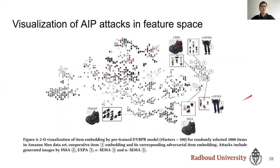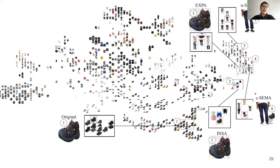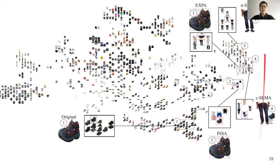Here we zoom in on Figure 4 from our paper, which shows a t-SNE space illustrating how items move when under attack. We see the original item in this space. Under attack, all items move to the other side — because that is close to where the hook item is. In SEMA, the hook item (in this case, jeans) is co-depicted in the image, and the attack moves all items to the area where jeans are located in the feature space.